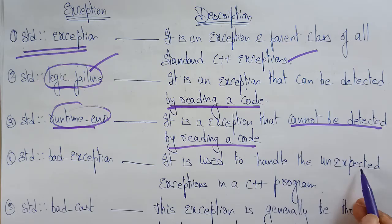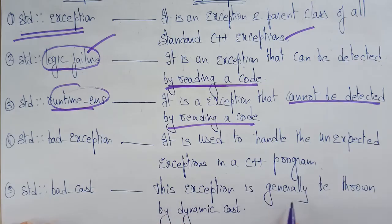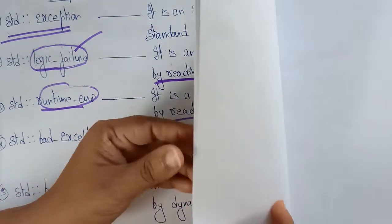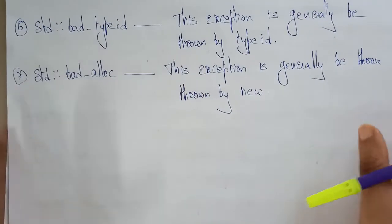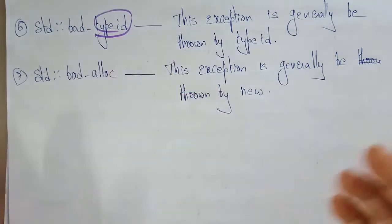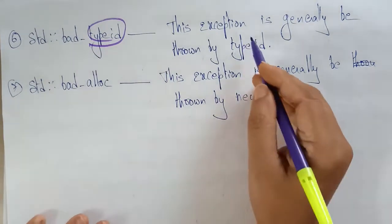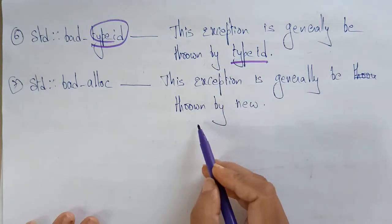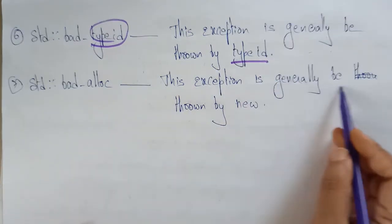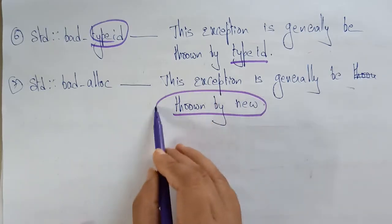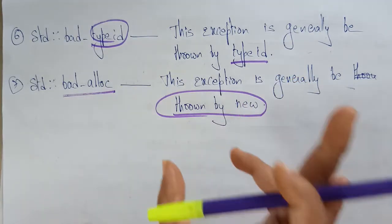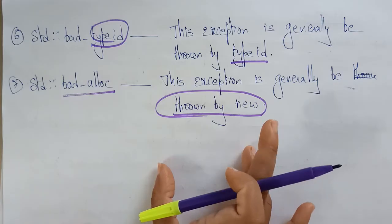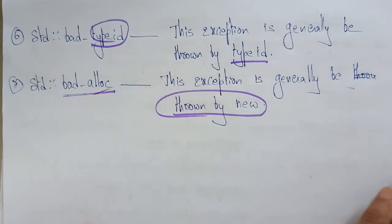bad_exception is used to handle unexpected exceptions in a C++ program. bad_cast — this exception is generally thrown by dynamic_cast. std::bad_typeid — this exception is generally thrown by typeid, whenever we give different IDs for different data types. bad_alloc — this exception is generally thrown by 'new'. Whenever you are entering a new value but the space is not suitable for that value, a bad_alloc exception will be raised.